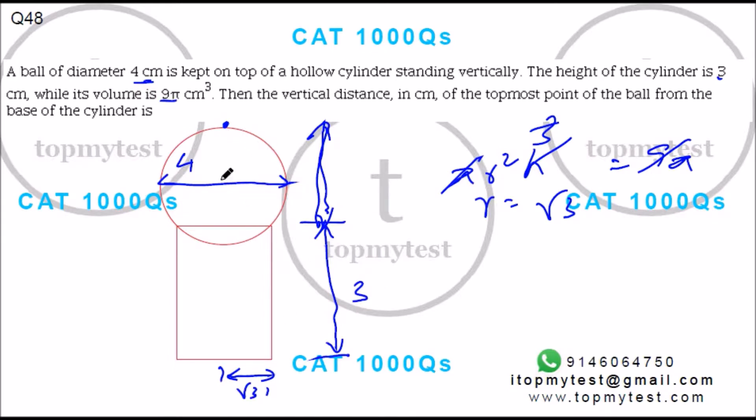So this length is 2. The diameter is 4, so radius should be 2. So this should also be 2. This part is 2. So I need to find this part.